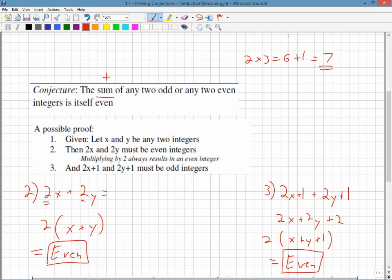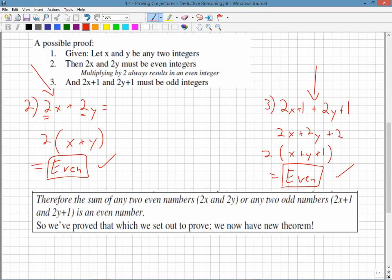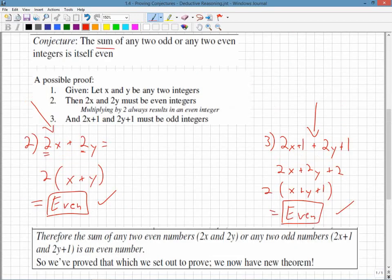So I've actually proven the conjecture. I've proven that the sum of any two odd numbers, right here, and the sum of any two even numbers, right there, is always even. So my theorem, or my postulate afterwards, would be therefore the sum of any two even numbers, 2x and 2y, or any two odd numbers, is an even number.